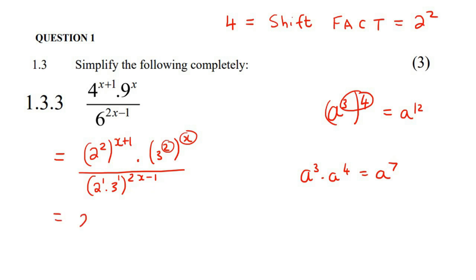Okay, so that's going to give us 2 to the power of, now multiply this 2 to both of those, so it will become 2x plus 2. Then for the 3, it'll be just 2x, and then down here, we're going to get 2 to the power of 2x minus 1, and then 3 to the power of 2x minus 1. Excellent job.